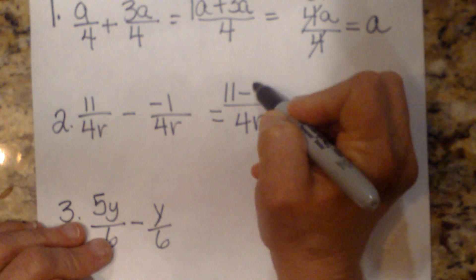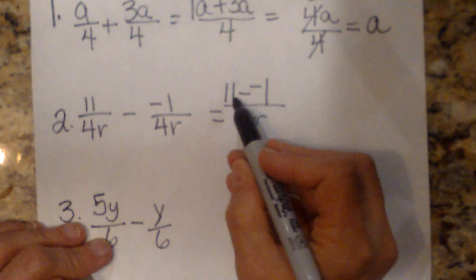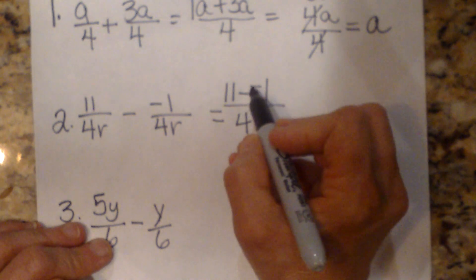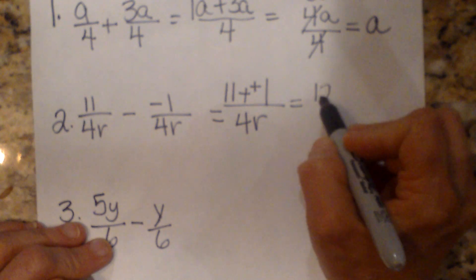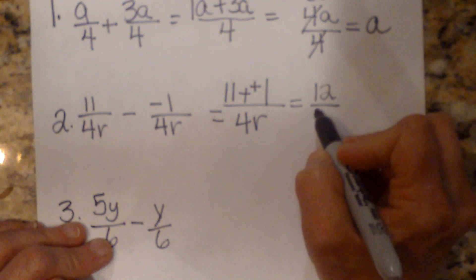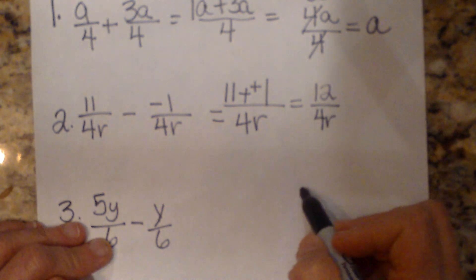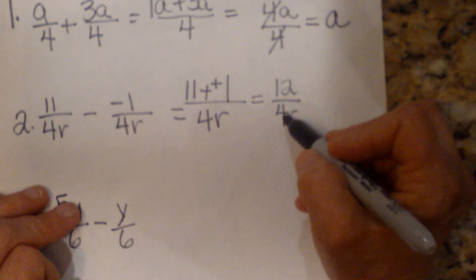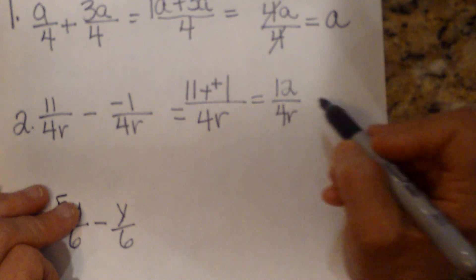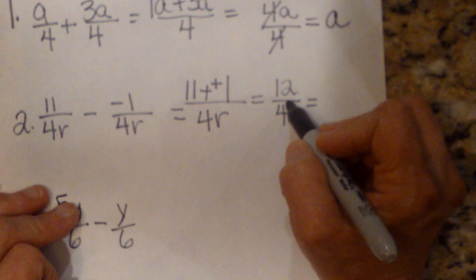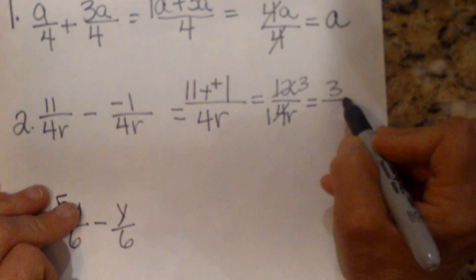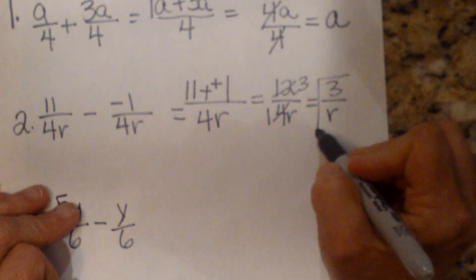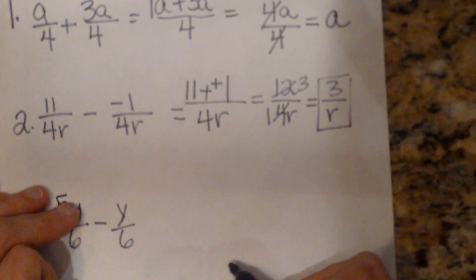So we're going to have 11 minus a negative 1. Well, 11 minus a negative, double negative becomes a positive. So I now have 12 over 4r. Now notice we can reduce this. 4 goes into 12 evenly. So let's just reduce this. That becomes 1. That becomes 3. So that's 3 over r. And there is our final answer.